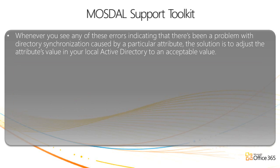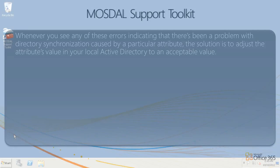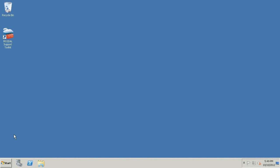Whenever you see any of these errors indicating that there's been a problem with directory synchronization caused by a particular attribute, the solution is to adjust the attribute's value in your local Active Directory to an acceptable value. To resolve the issue, we must first determine the duplicate values and values that conflict with other Active Directory objects.